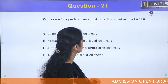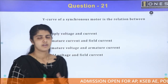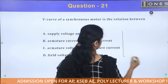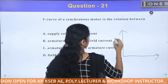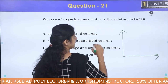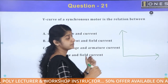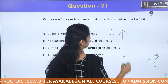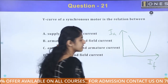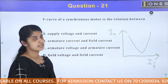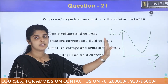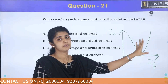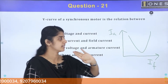The V-curve of a synchronous motor is the relation between armature current and field current. The V-curve of a synchronous machine is a graph of armature current versus field current. When the V-curve variation is lagging power factor and leading power factor, the curves are A-shape respectively.